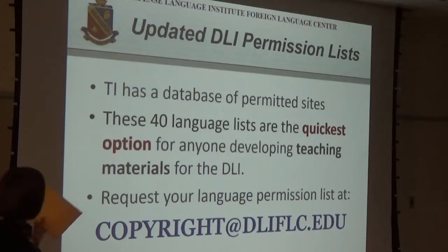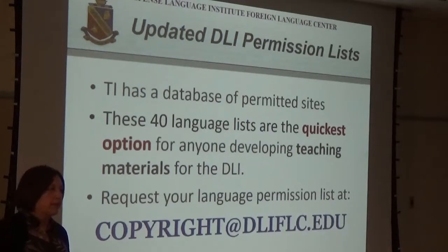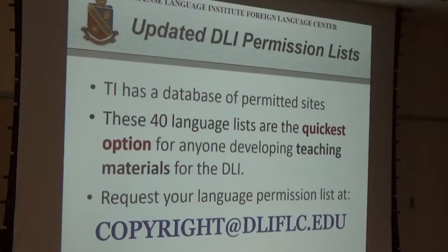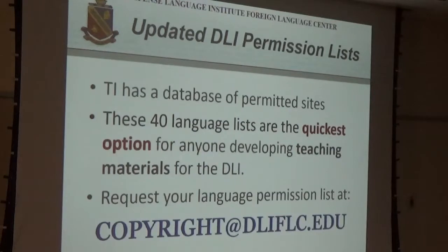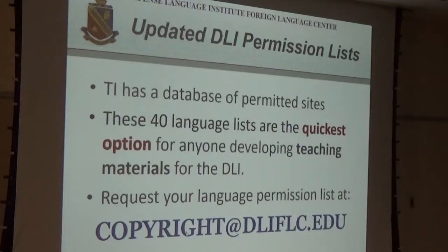What's new about the permission list? Lise has been working really hard on updating the permission lists, especially for countries whose copyright situations have recently changed, like Afghanistan. If you need to know what kind of materials to use, the most efficient way is to request your language list at copyright.dliflc.edu — whether it's Arabic, French, Pashto, or whatever. Lise will send you the latest, most up-to-date list in your language. We have about 40 languages covered.